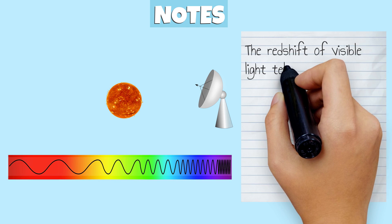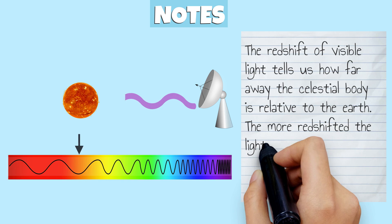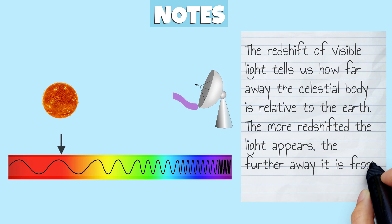The redshifted visible light tells us how far away the celestial body is relative to the Earth. The more redshifted the light appears, the further away it is from the Earth.